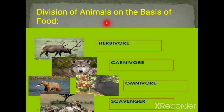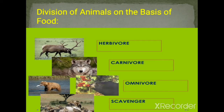Animals are divided on the basis of food into herbivores, carnivores, omnivores, and scavengers. Herbivores are animals that feed on plants — for example, cows, grasshoppers, and deer feed on grass; butterflies and hummingbirds feed on the nectar of flowers; caterpillars feed on leaves; and some monkeys feed on fruits.